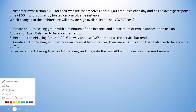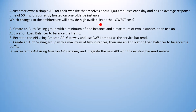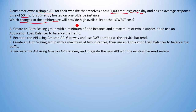Let me mark the hints here. First hint: 1000 requests each day and average response time of 50 milliseconds. Another hint: it is a very simple API. I am not marking the c4.large instance as a hint because the question asks about changing the architecture, so the current instance type doesn't matter. The key hint is that they are ready to change the architecture.